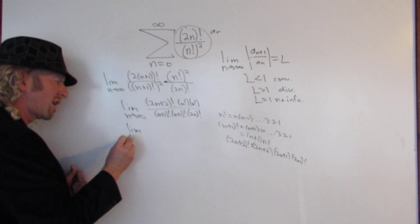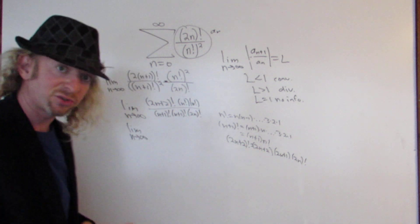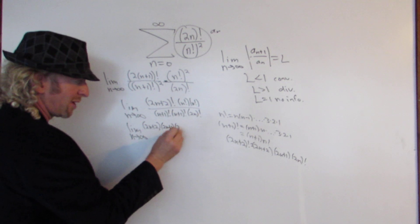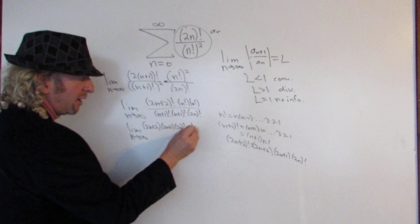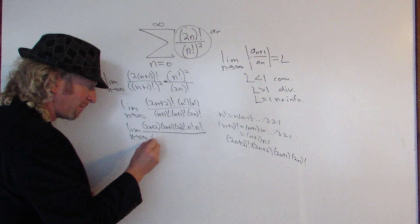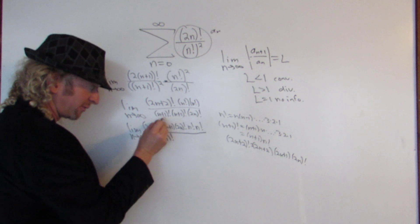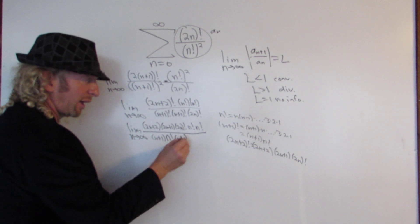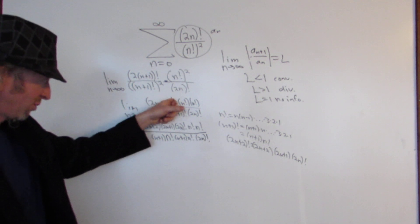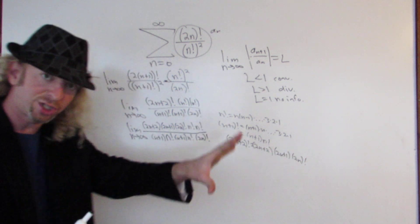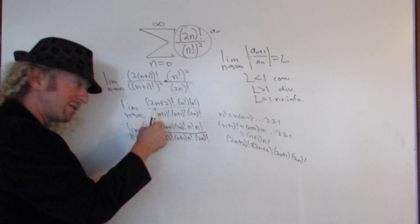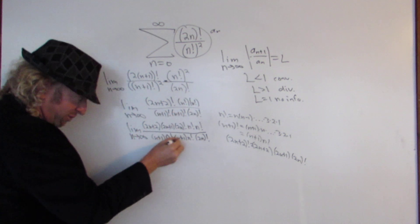So this equals the limit as n approaches infinity. We write (2n+2)! as (2n+2)·(2n+1)·(2n)!, and then n!·n! in the numerator. In the denominator, each (n+1)! becomes (n+1)·n!, so we have (n+1)·n! times (n+1)·n!, and then (2n)!. Now look at this — the (2n)! cancels, and the n! terms cancel, leaving us with (2n+2)·(2n+1) in the numerator and (n+1)·(n+1) in the denominator.